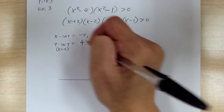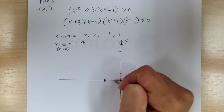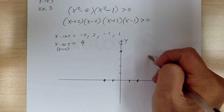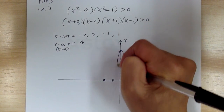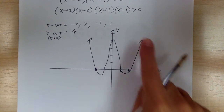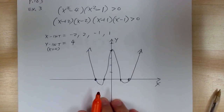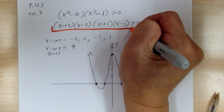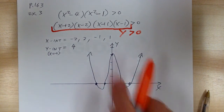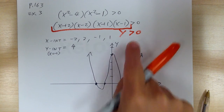So you have x-intercepts at -2, +2, -1, +1, and y-intercept at +4. Your graph looks like the W shape we saw before. Now remember, y is a function of x, so think of this whole expression as y. You're looking for the part of the graph where y is greater than zero.